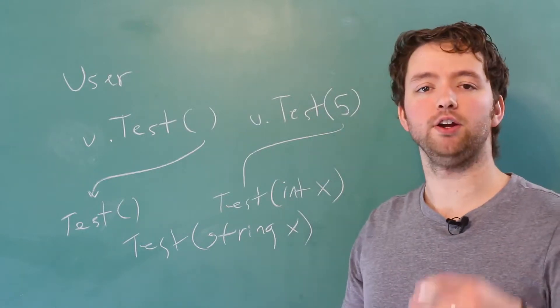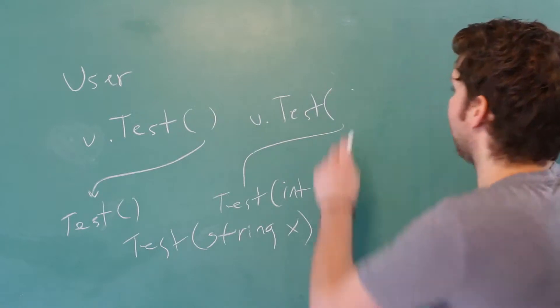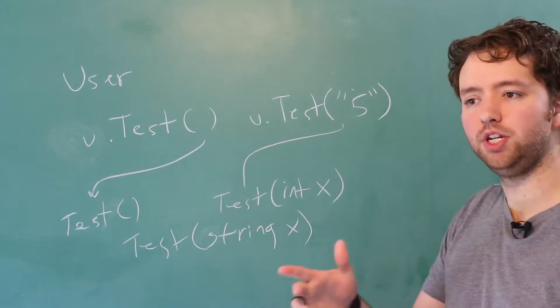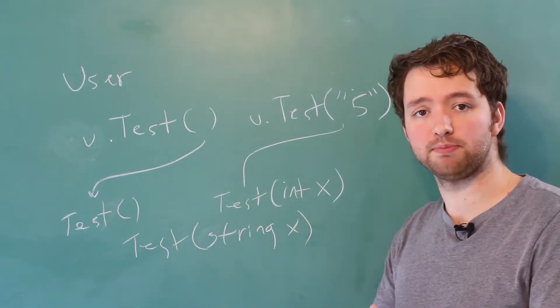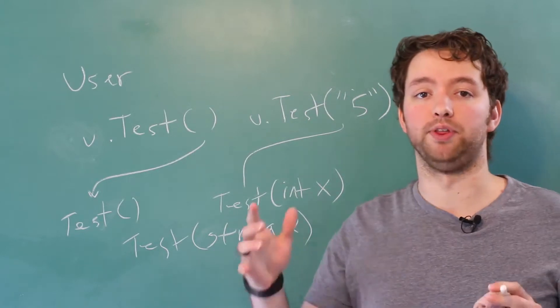Now why? The benefit here is that we can pass in different values. For example, we could pass in a string with the value five. So if you have methods that you need to be able to accept various different types and maybe the functionality is just a little bit different, you can do that with overloads.